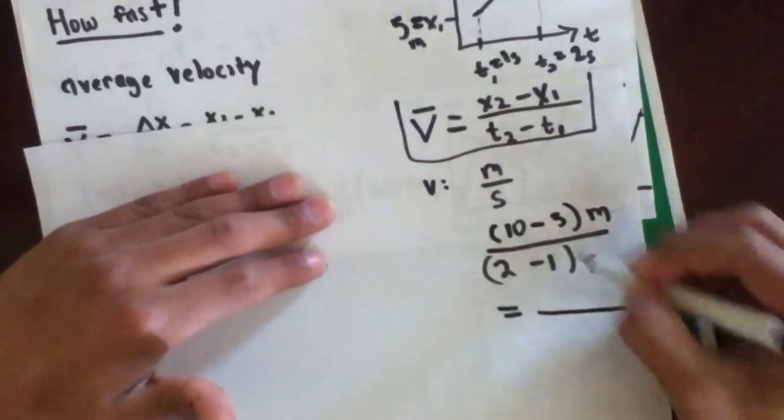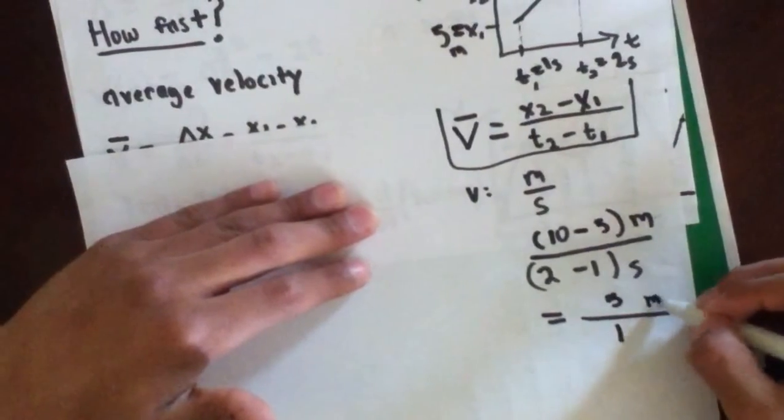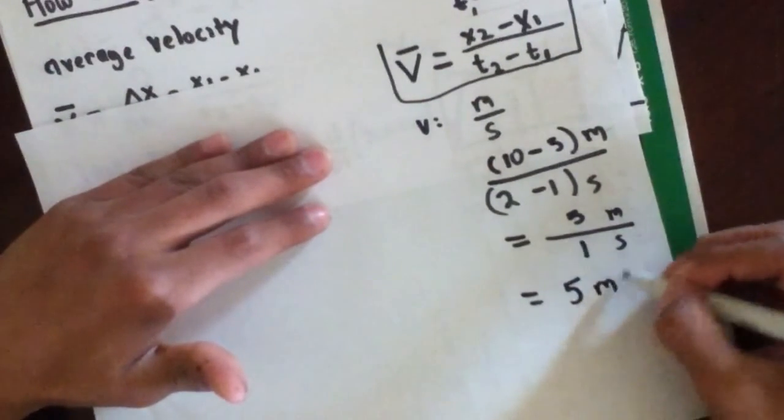So after a little bit of arithmetic, we see that our answer is five over one meters per second, or simply just five meters per second.